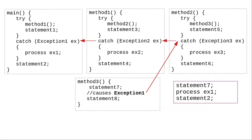In the event that method 3 does statement 7 and then throws an exception of type exception 1, method 3 terminates and throws the exception to method 2, which in turn has to throw the exception to its caller, method 1, which also terminates and throws the exception to main, which does handle the exception and executes statement 2.